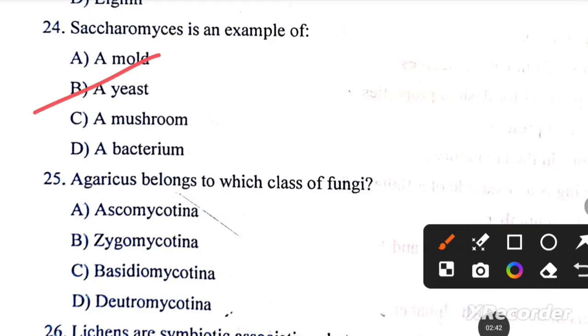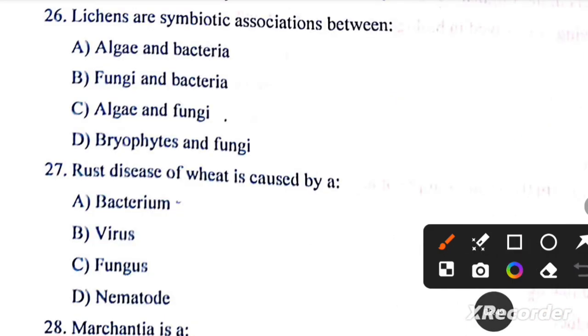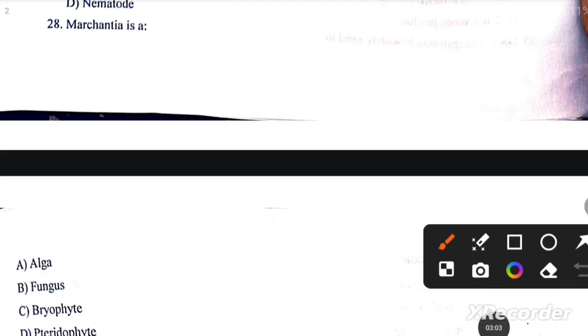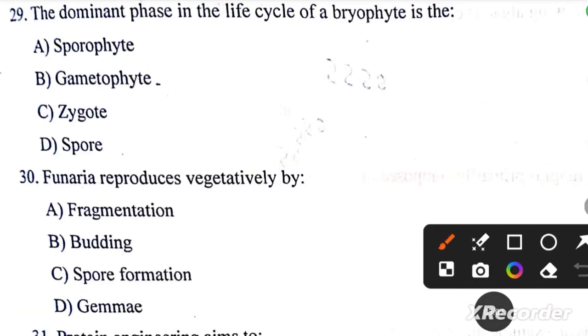Next question, question number 25: Agaricus belongs to which class of fungi? The answer is option C. Lichens are symbiotic associations between algae and fungi. Rust disease of wheat is caused by fungus. Next question: Marchantia is a bryophyte. The dominant phase in the life cycle of a bryophyte is gametophyte. Funaria reproduces vegetatively by fragmentation.